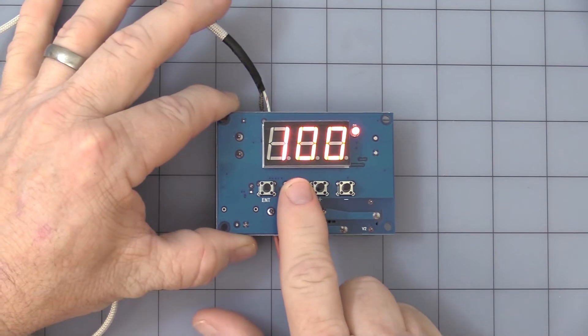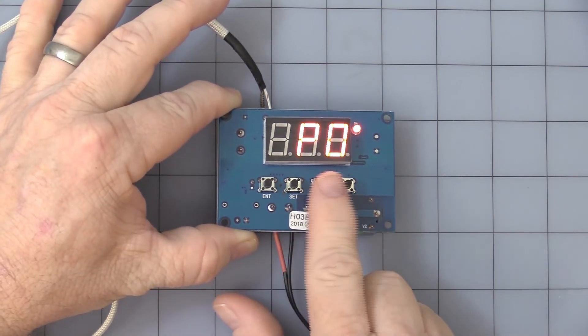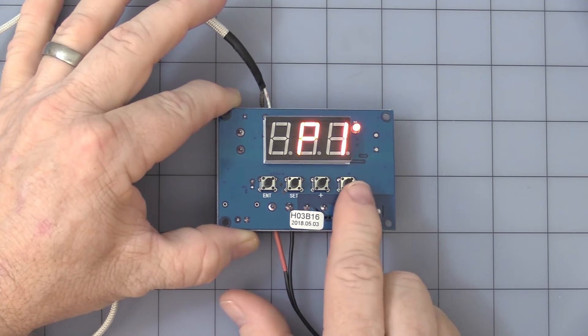To leave it alone, it goes back. Press and hold the set button again. Then you have P2.